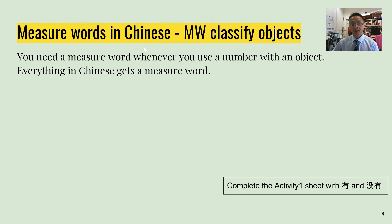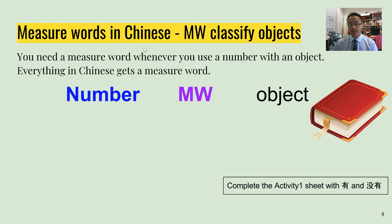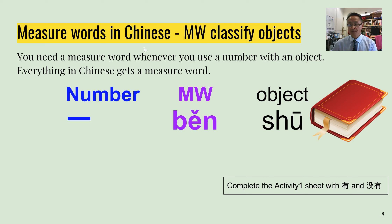Let's have a look at some key ones we'll be using in this lesson. The structure is: number, measure word, object. So when you're saying 'one book' — in English we don't have a measure word for book, but in Chinese you do. The measure word is 本 — 一本书, one book.